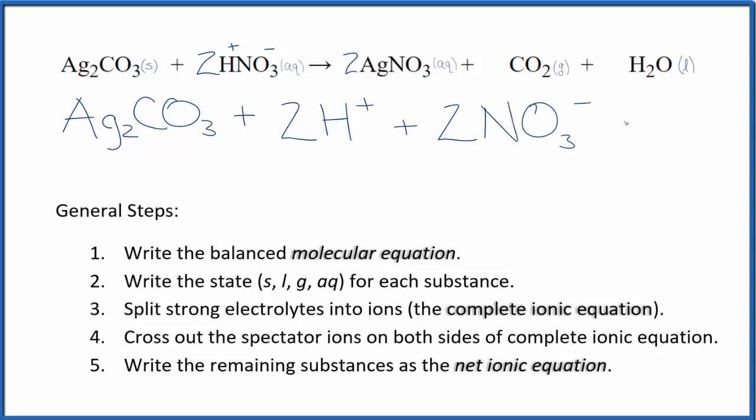So these are the reactants in our net ionic equation. For the products, nitrate is 1 minus, silver is going to be 1 plus. So I have two silver ions, two Ag plus, and then I have two nitrate ions, just like in the reactants we had two nitrate ions.